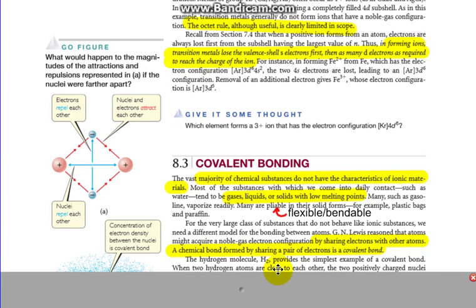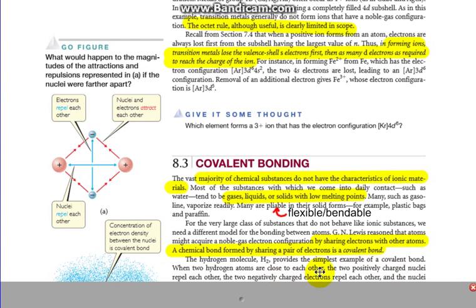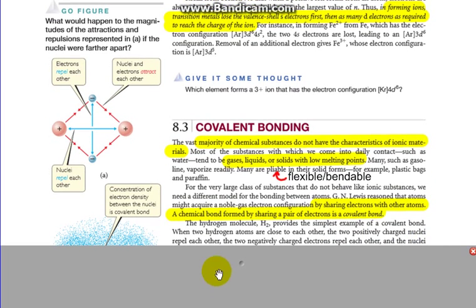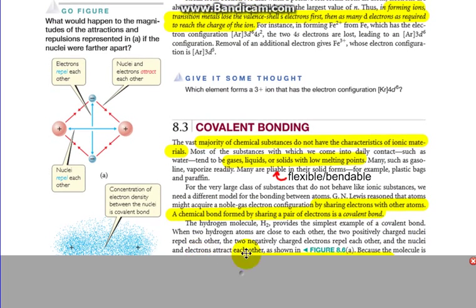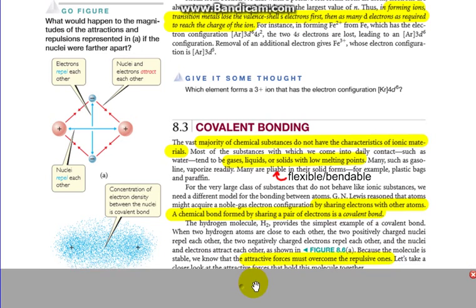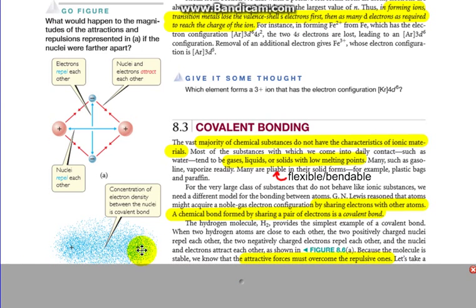The hydrogen molecule, H2, provides the simplest example of a covalent bond. The two hydrogen atoms are close to each other. The two positively charged nuclei repel each other, though. The two negatively charged electrons also repel each other. And the nuclei and electrons attract each other, as shown in this figure. Even though the two hydrogen nuclei are both positive and repel, electrons and electrons repel.